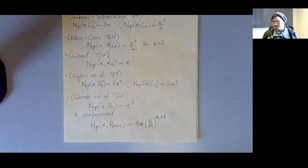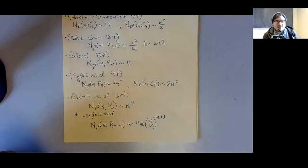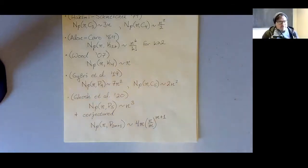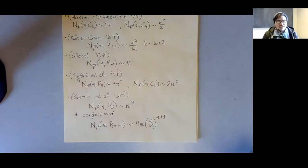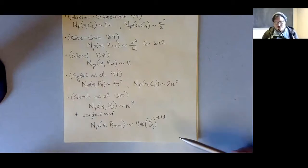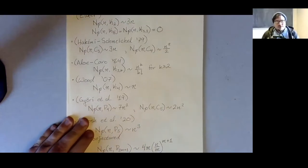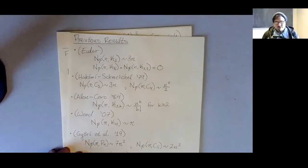Just last year, Ghosh and friends were able to figure out the maximum number of P_5s in a planar graph. This is the first result that is truly asymptotic — they did not figure it out exactly. They had a conjecture for what should happen for all odd paths — paths on an odd number of vertices — conjecturing the answer to be 4m times (n/m)^{n+1}, roughly speaking. This is really the starting point of Ryan and my work.